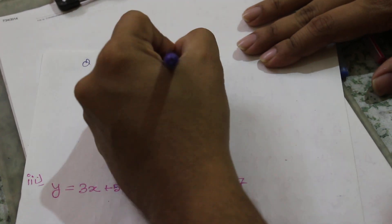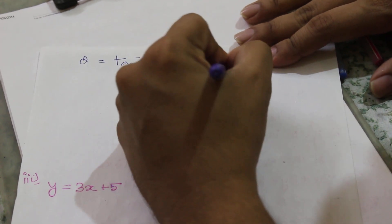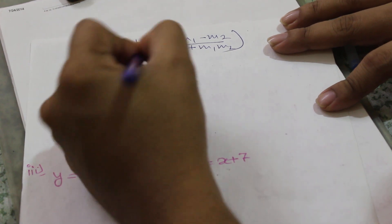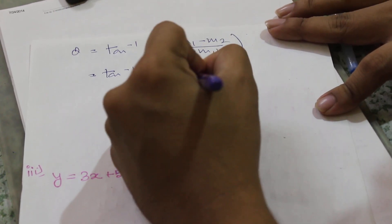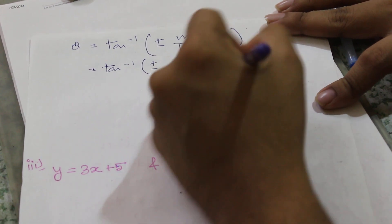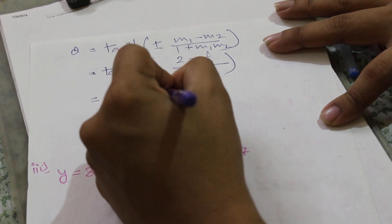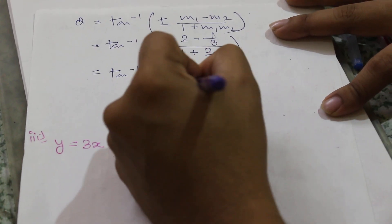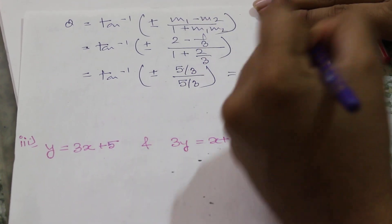So θ = tan⁻¹(±(2 - 1/3)/(1 + 2·(1/3))) = tan⁻¹(±(5/3)/(5/3)) = tan⁻¹(±1).